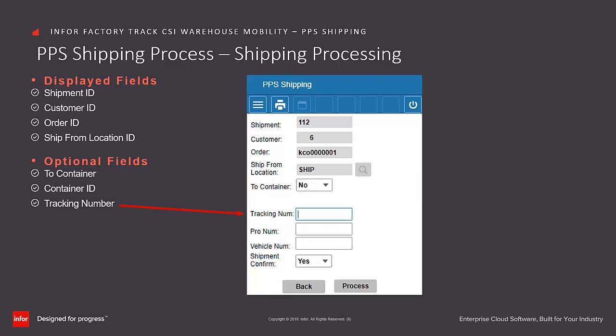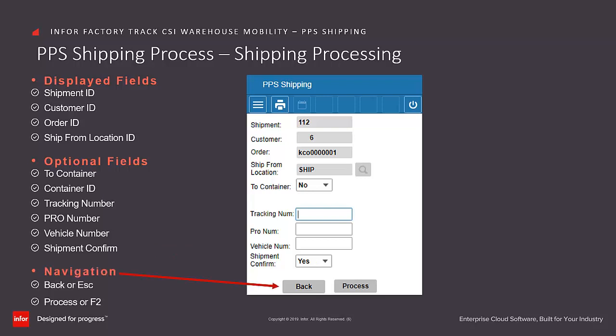Enter or scan the tracking number and the PRO tracking number for the shipment, the vehicle number for the shipment, and indicate whether the processing in this transaction will complete the shipment confirmation — this defaults to yes. If the user chooses no, the logic would update the shipment master with the data added and update the status as ready to ship. Click on Process to continue with the processing.